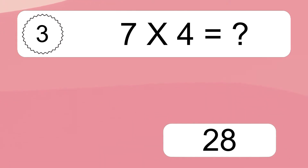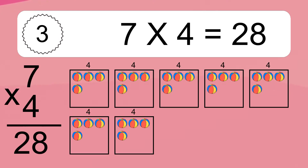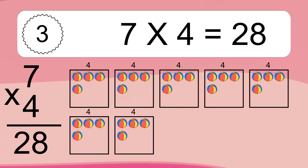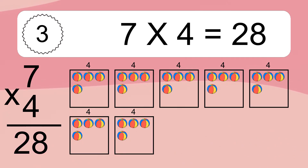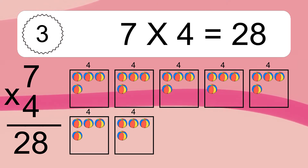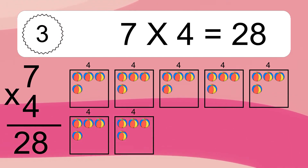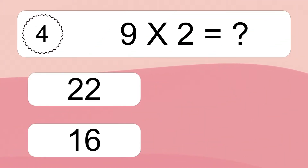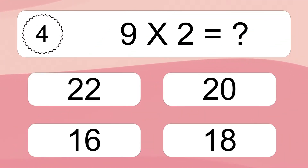7 times 4 equals what? 7 times 4 equals 28. We have 7 boxes, and each box has 4 colorful balls inside. If you count all the balls in all the boxes together, you will have 7 times 4 balls. This equals 28 balls.